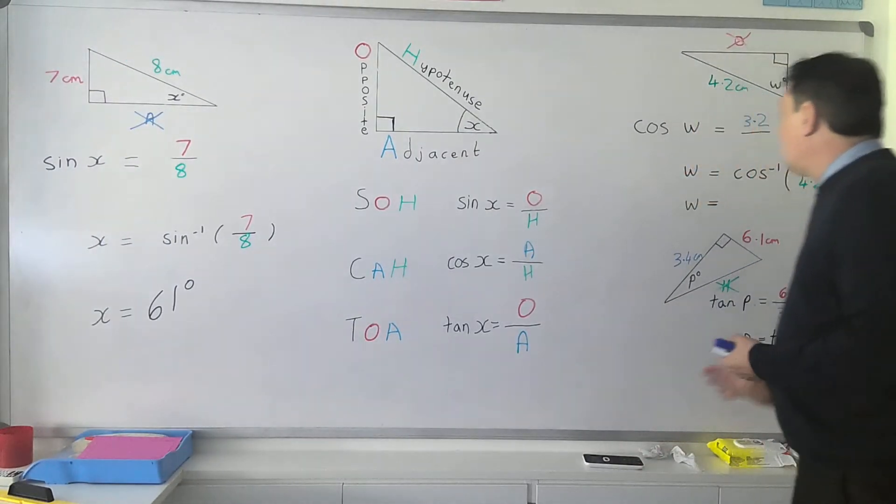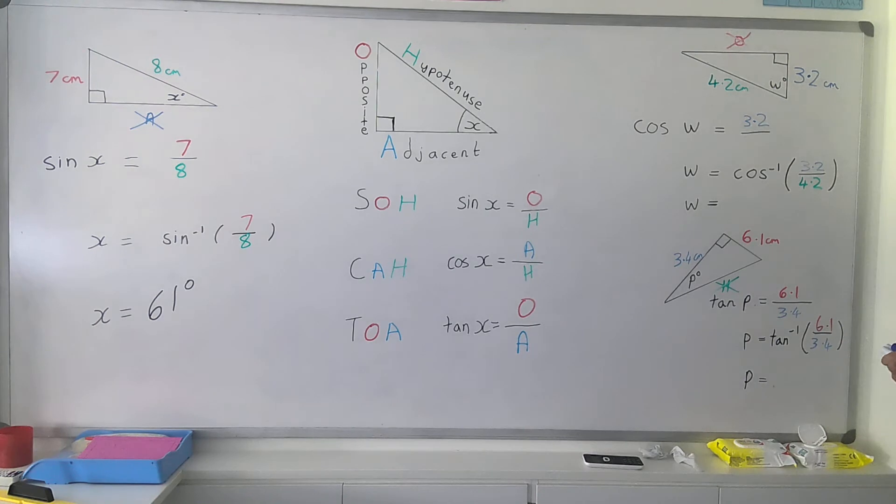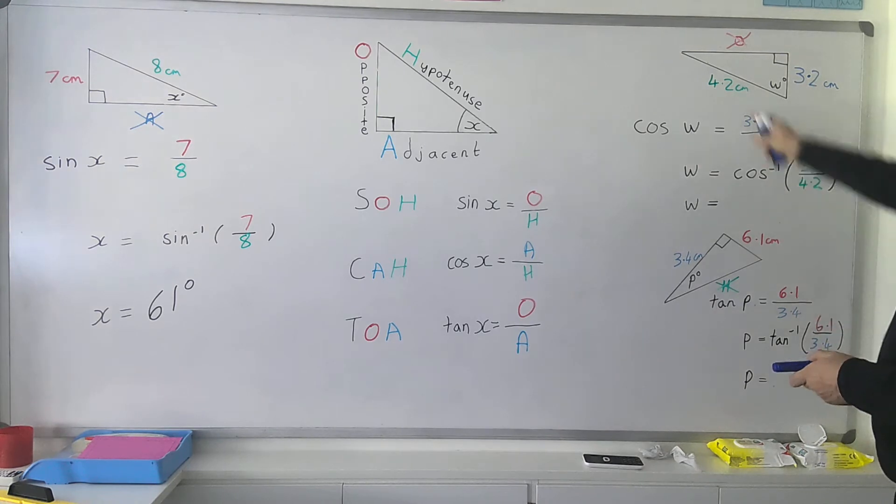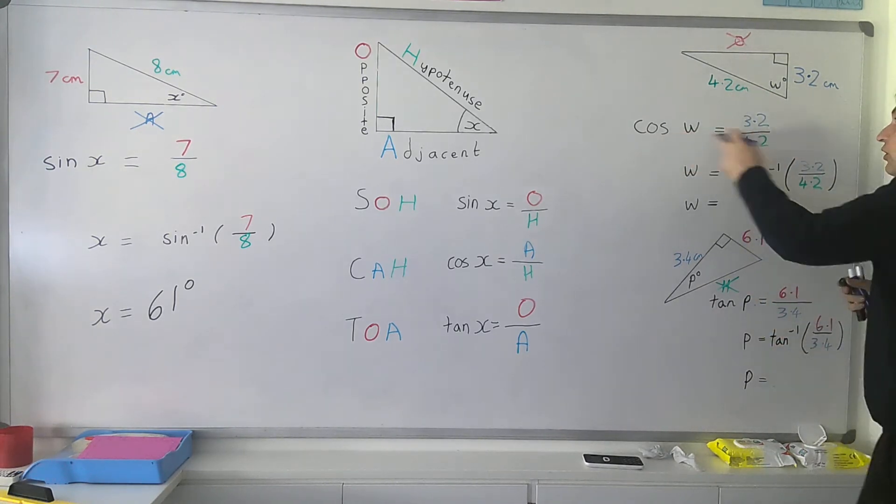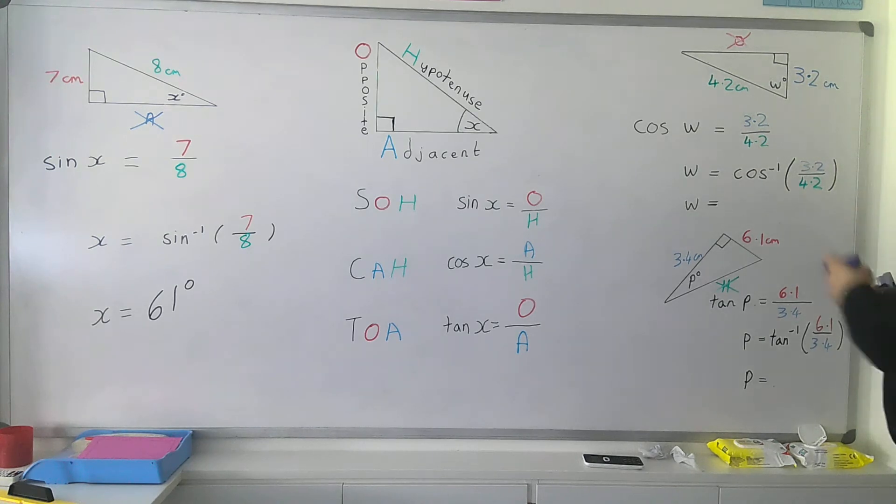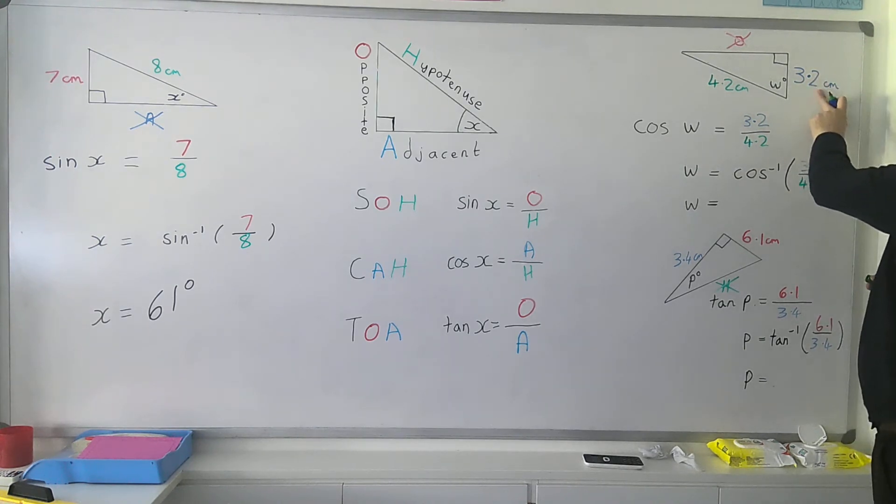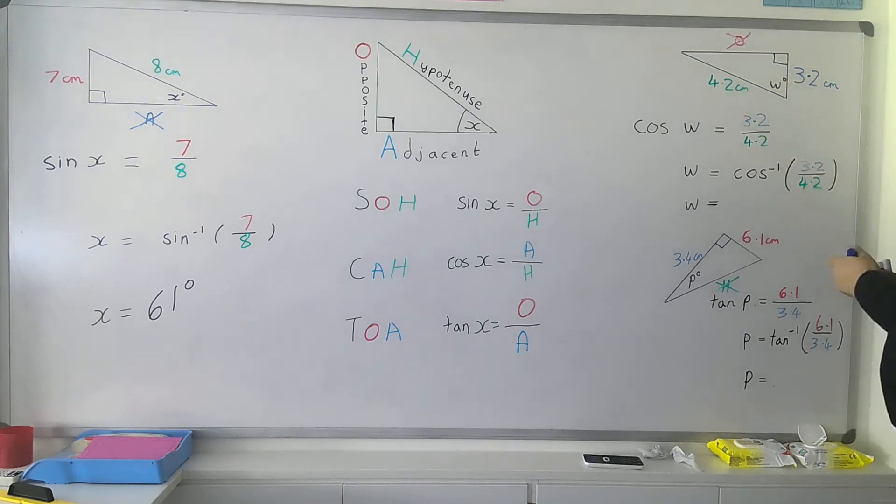Having a look at this one, we've got cos w because we're going to have an adjacent side here, and we've got our hypotenuse, so I'll pop the hypotenuse side of 4.2 in there. So cos of this angle w is 3.2, the adjacent side, divided by 4.2.